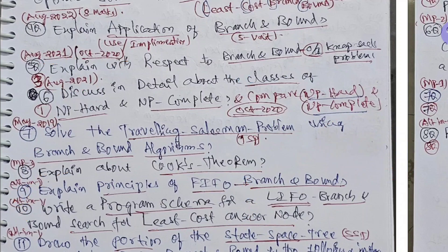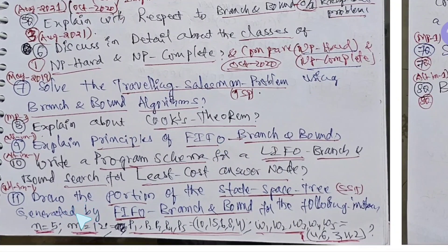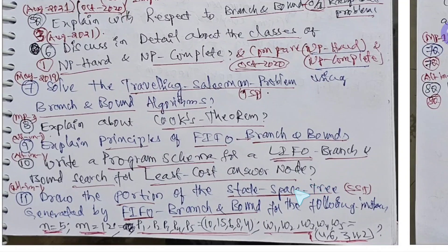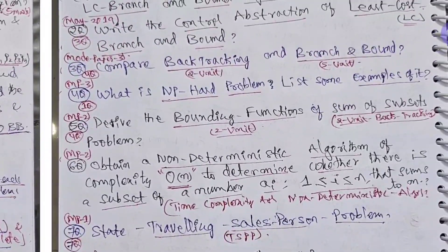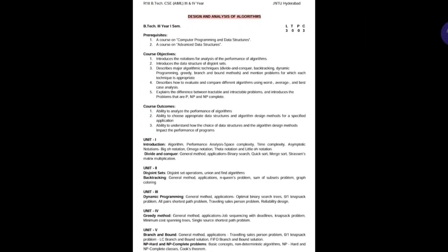And write a program scheme for LIFO branch and bound. This video also I have not suited and I have notes for this. These two, 9th and 10th, these are all-in-one important questions. And we will see 10th question. Draw the portion of the state space tree generated by FIFO branch and bound for following equations. So I will show you all those. And this side we have short questions. And I will show you the syllabus. This is the syllabus we are having.